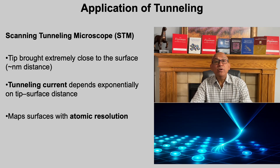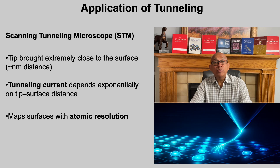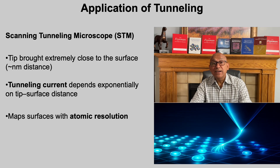A classical example of tunneling applied in real-life nanoscale characterization is the scanning tunneling microscope, or STM. In STM, a sharp conducting tip is brought within a nanometer of the sample surface. At this distance, electrons can tunnel between the tip and the surface even though they are separated by a vacuum gap. The tunneling current depends exponentially on the tip-sample distance, so even small height changes at the atomic scale cause measurable differences. By scanning the tip across the surface and recording the tunneling current, the STM constructs images with true atomic resolution, showing us the position of individual atoms. This is a direct example of how tunneling has become the foundation of one of the most powerful tools in nanoscience.